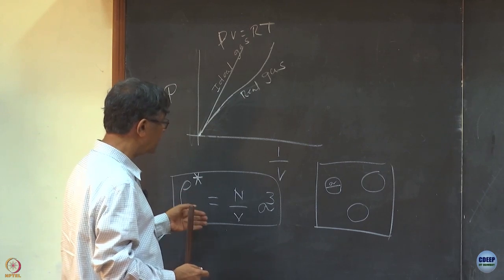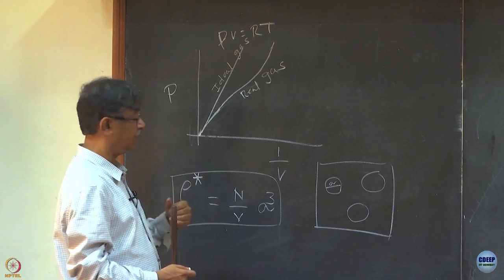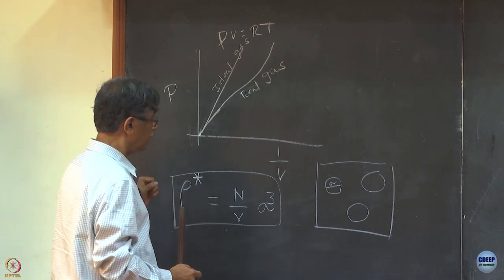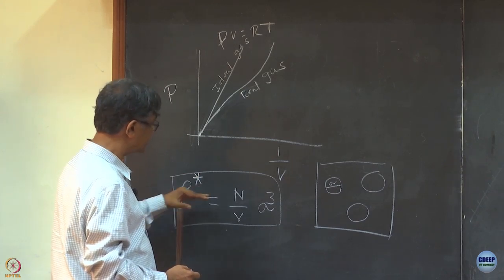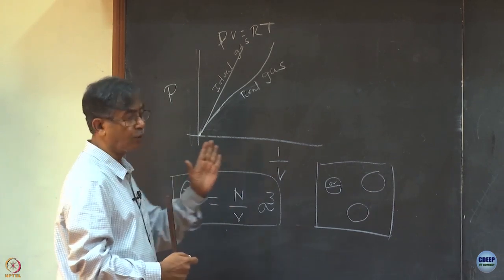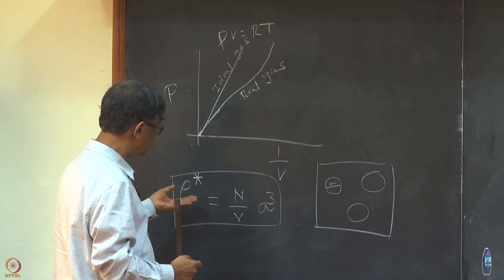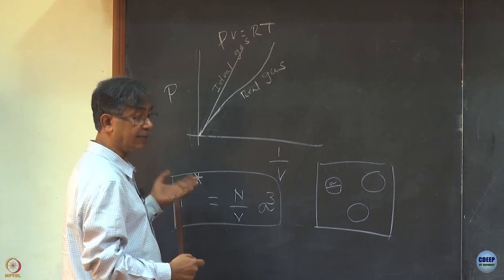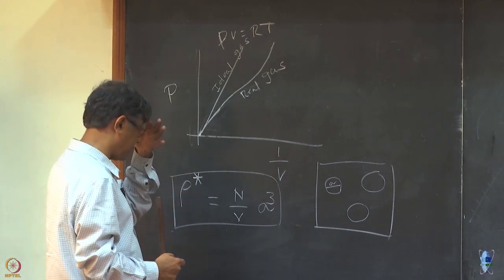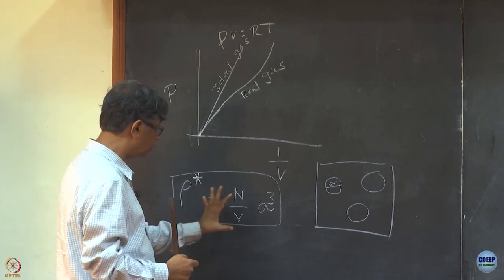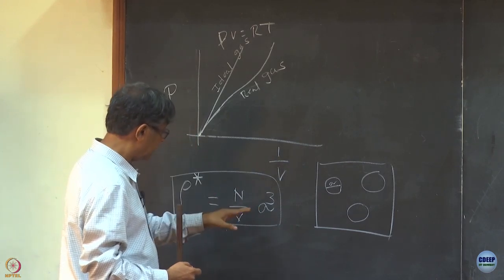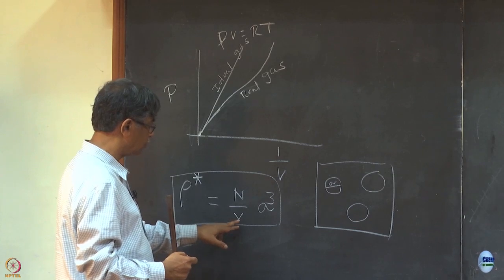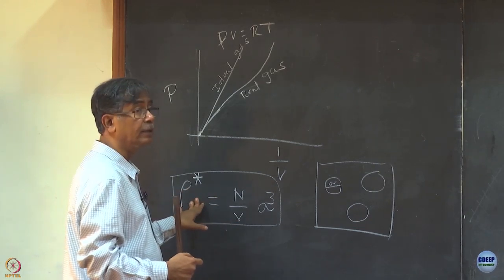For example, the rho star typically in the liquid is between 0.8 or 0.85 to 0.95. Gas is between about 0.1 or so. In between these gas and liquid, there is a huge coexistence which really takes you from 0.1 to 0.6 or so. Why it is important? Because, now I tell you some numbers like water, rho star is 0.76, acetonitrile something like 0.85, methanol little bit more dense, it is about 0.9.